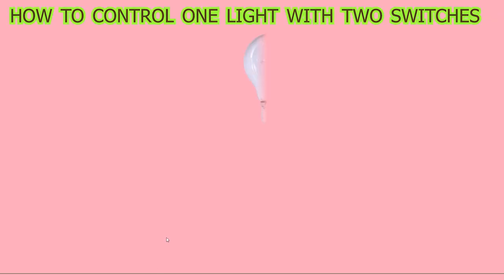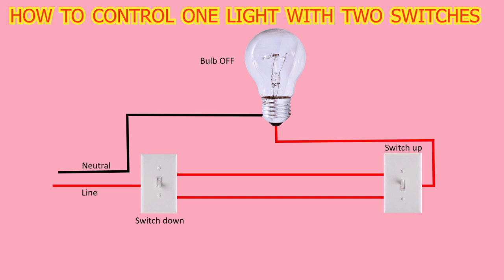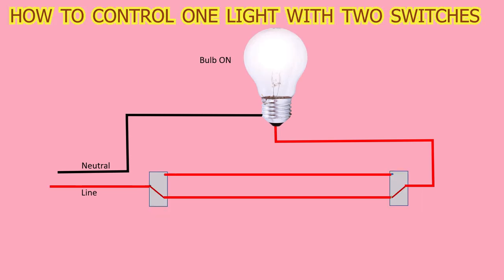This video will explain how two-way switches operate when we want to control a light from two different locations. In some countries, this type of switch is known as a three-way switch, but in other regions, it is called a two-way switch.